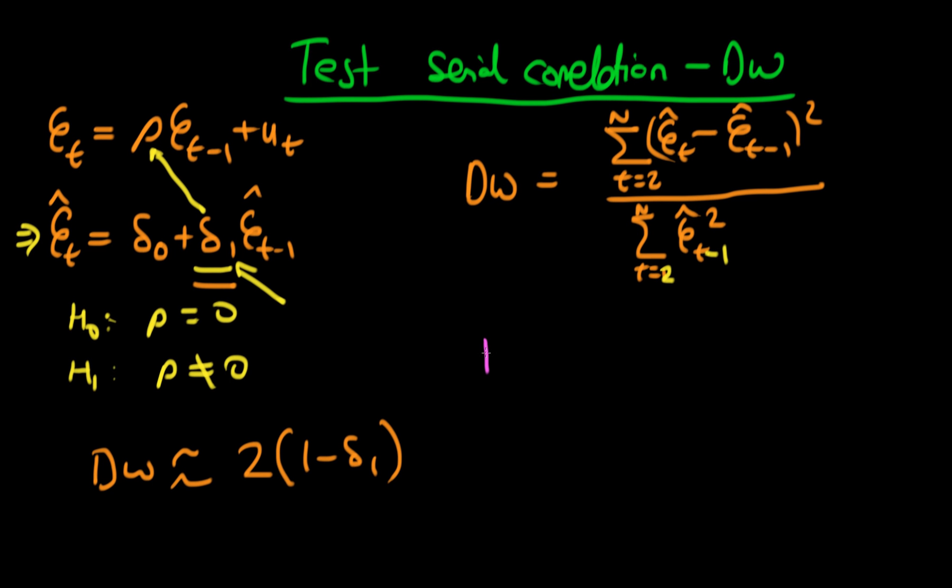The null hypothesis for the Durbin-Watson statistic is that rho is equal to 0 against the alternative hypothesis which is that rho is greater than 0. So immediately we see that there is some sort of difference in the alternative hypothesis between the two different types of tests. That's one particular difference.